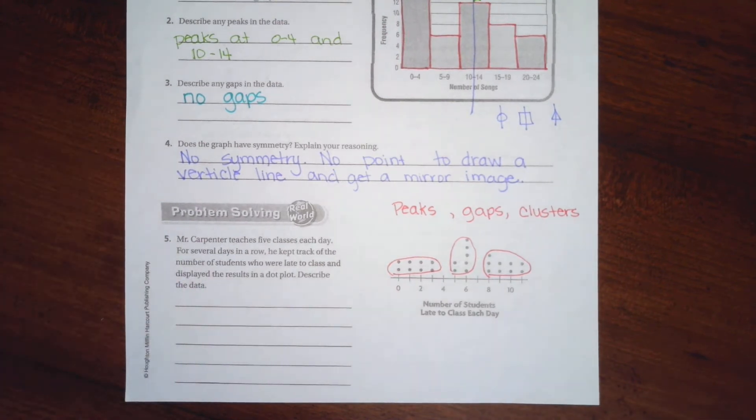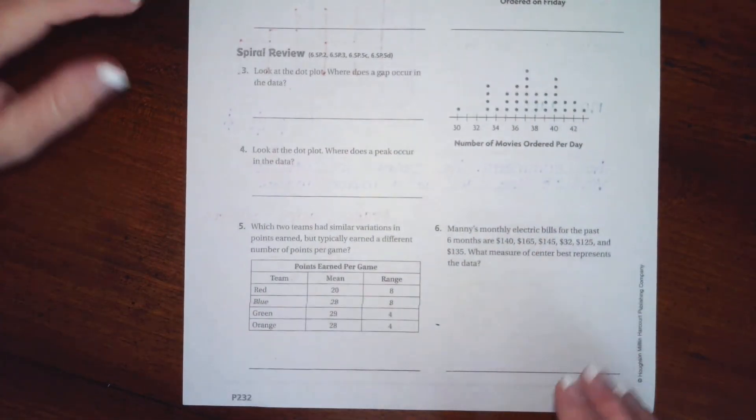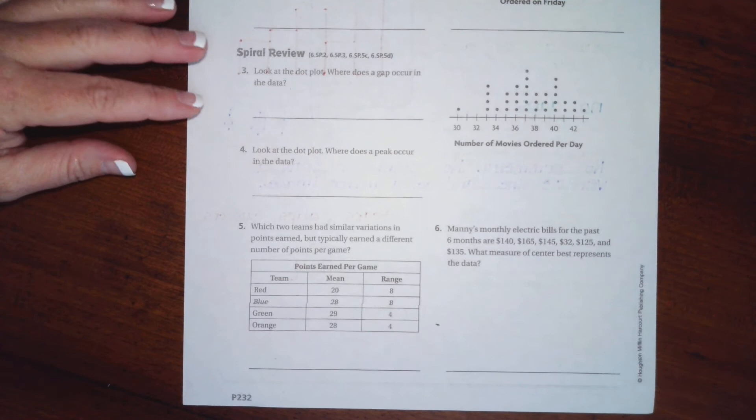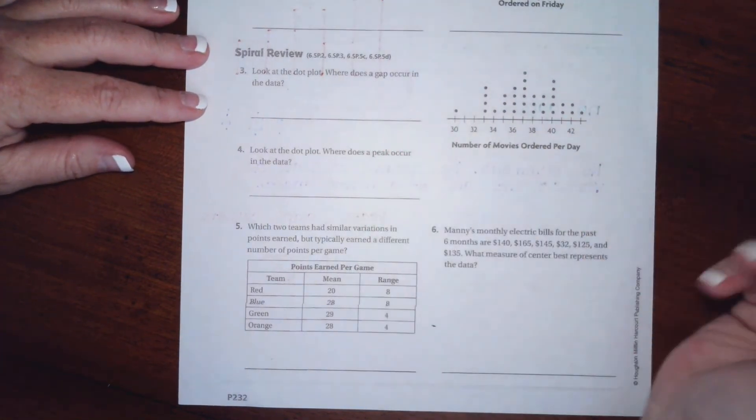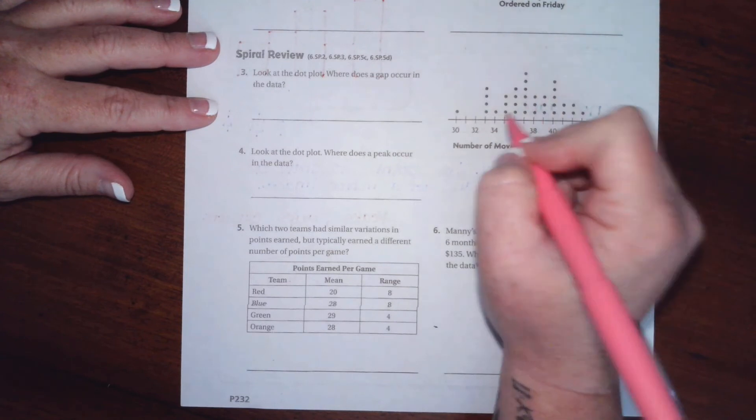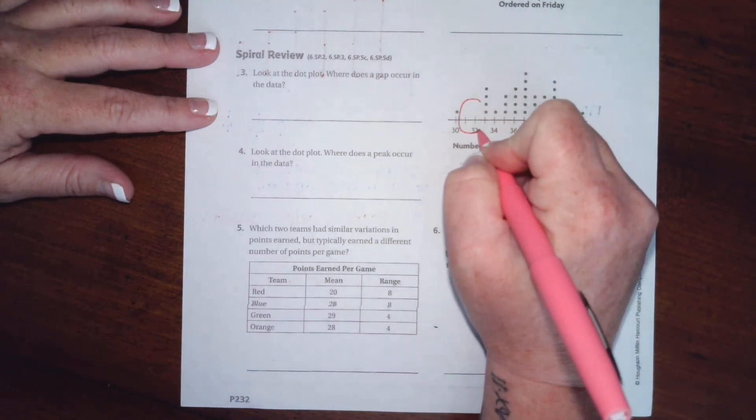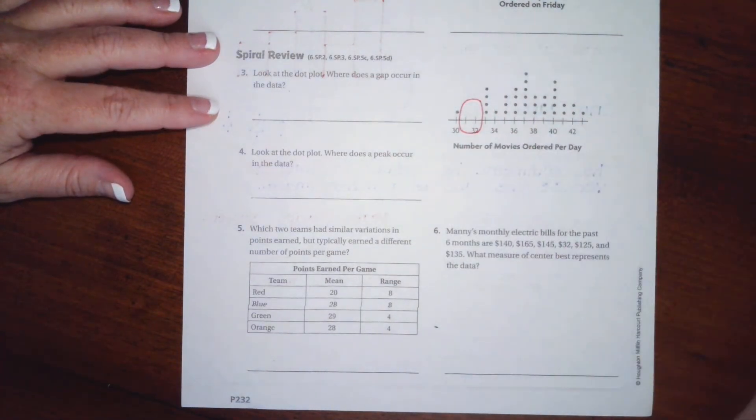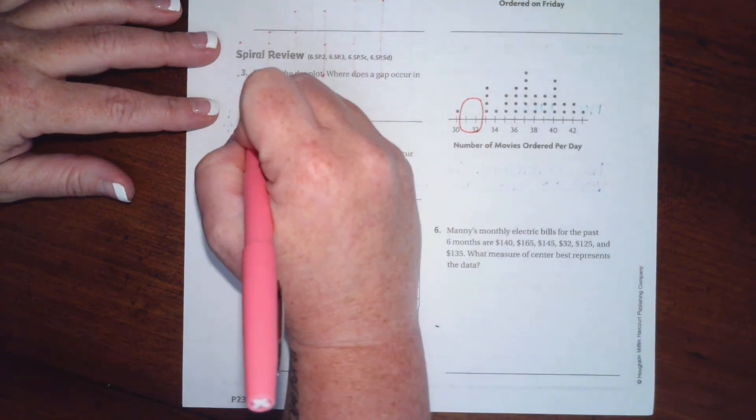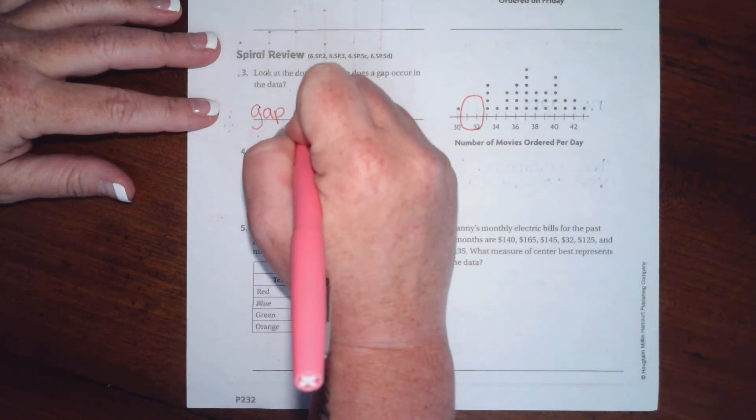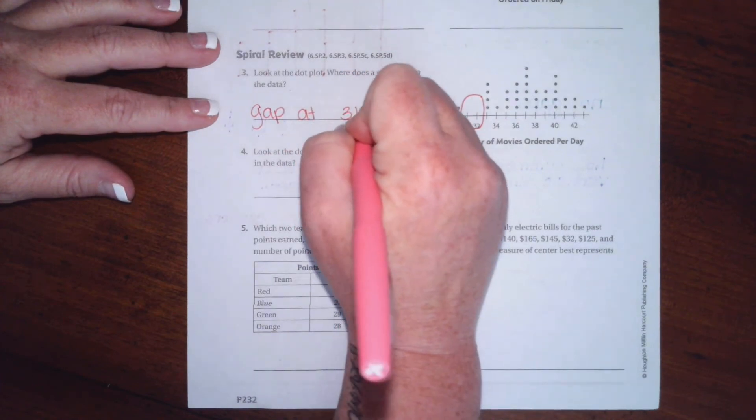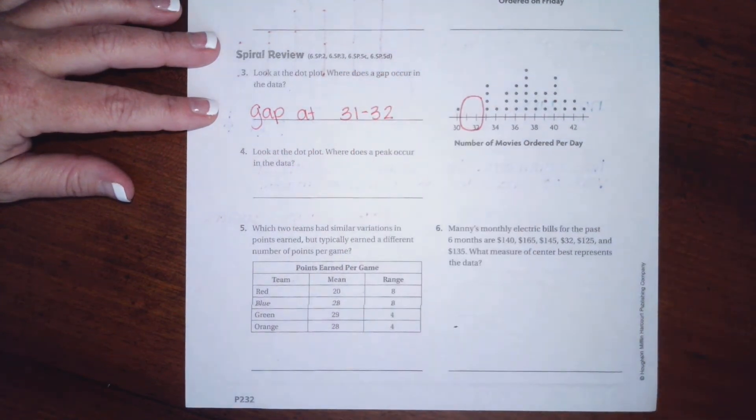All right guys, we're going to go over the back where you are going to do the lesson check, just like always. And we're going to go down and do spiral review. Spiral review says to look at the dot plot. Where does the gap occur in the data? Well, the only gap that's there is around 31 and 32. So gap at 31 to 32.